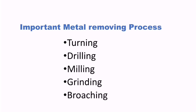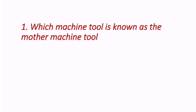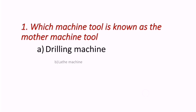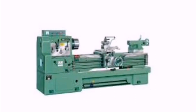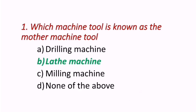The important metal removing processes include turning, drilling, milling, grinding, and broaching — which you have seen in your diploma. Let's get started with the first question: Which machine tool is known as the mother machine tool? Looking at this figure, this is a lathe machine, and it is called the mother machine tool.